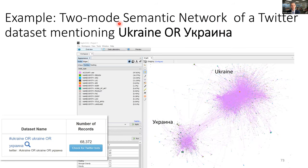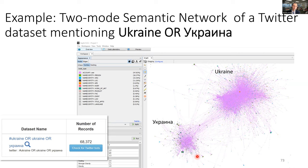To demonstrate: a Twitter dataset of 68,000 tweets mentioning Ukraine in English or Ukrainian Cyrillic — collected during a conflict that was rising last spring — when visualized using two-mode semantic networks revealed two distinct clusters: one around accounts discussing the conflict in Russian language and one in English. This illustrates the kinds of analysis possible with this type of network.